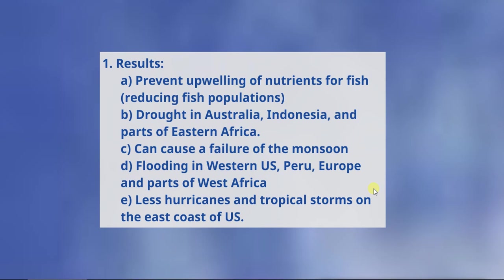We have flooding in the western U.S. and typically flooding in Peru. The Atacama Desert, which is completely dry, gets tons and tons of rainfall during El Niño. Europe and parts of western Africa will also flood. Interestingly, we actually have fewer hurricanes and tropical storms on the east coast of the U.S. — not necessarily because fewer form, but because the trade winds aren't pushing as hard toward the eastern United States. Tropical storms tend to fizzle out over the ocean instead of reaching landfall.